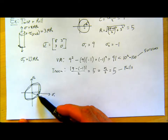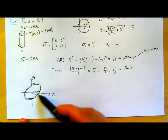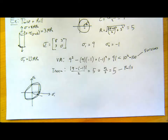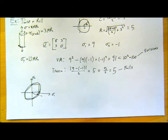We're still hitting this Tresca surface and we're still inside our Von Mises surface, so failure wouldn't have happened there. This is where the nuances of exactly what failure criterion you use come up.